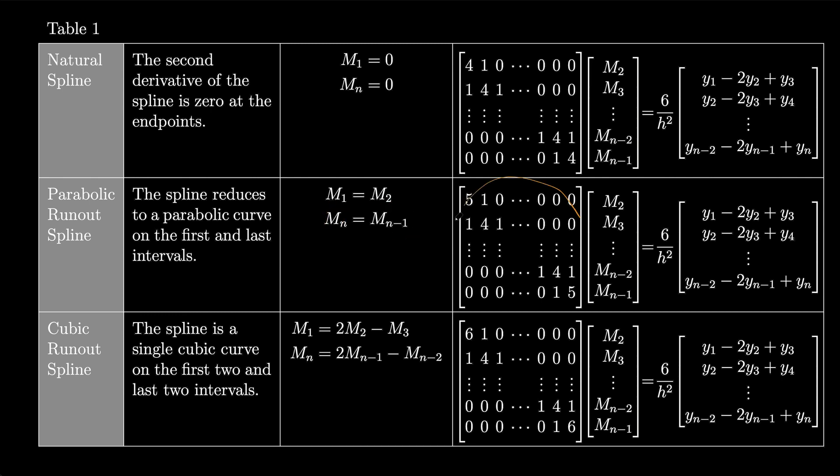It gives us a slightly different matrix. It just has fives instead of fours at the corners. And then the cubic runout spline is the spline that is a single cubic curve on the first two and last two intervals. So m1 is 2m2 minus m3, and mn is 2m(n-1) minus m(n-2). And it just changes the matrix and puts a 6 over there.